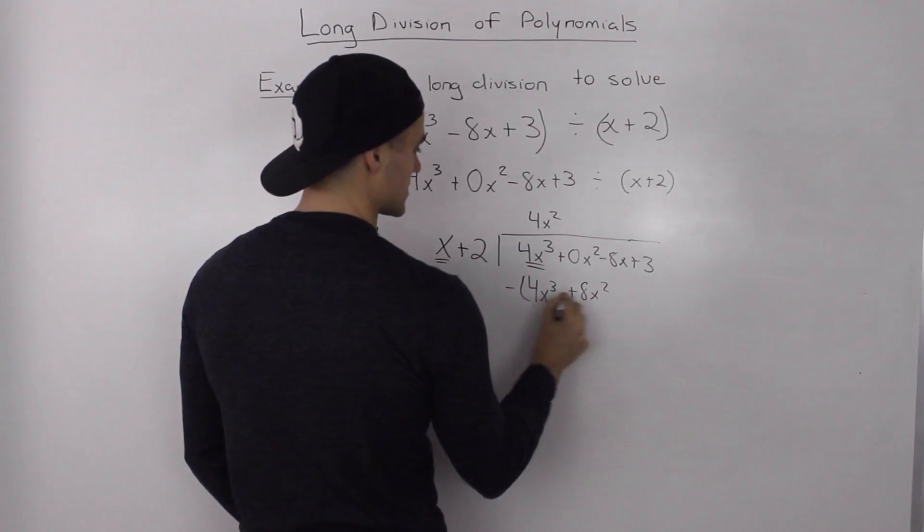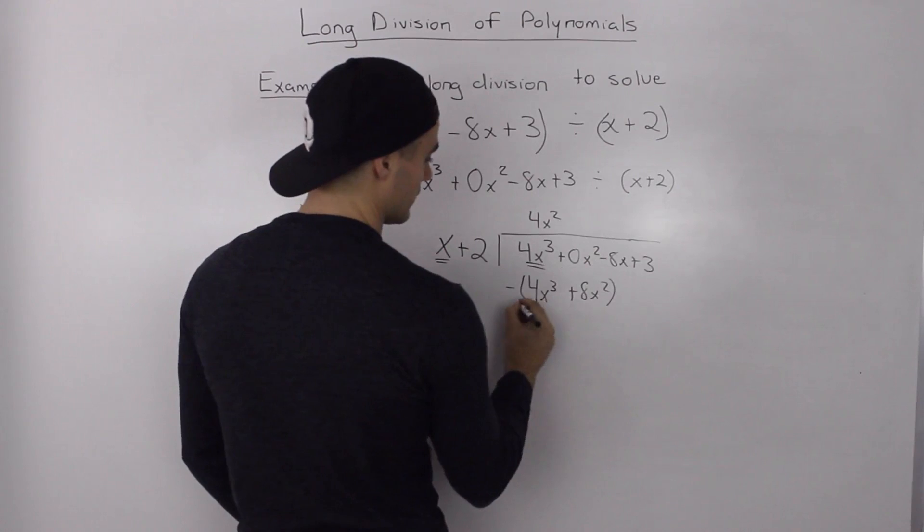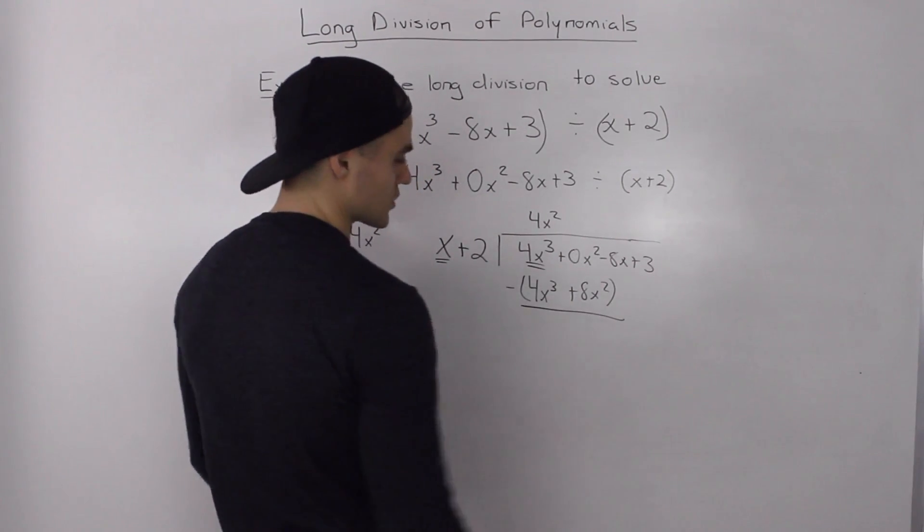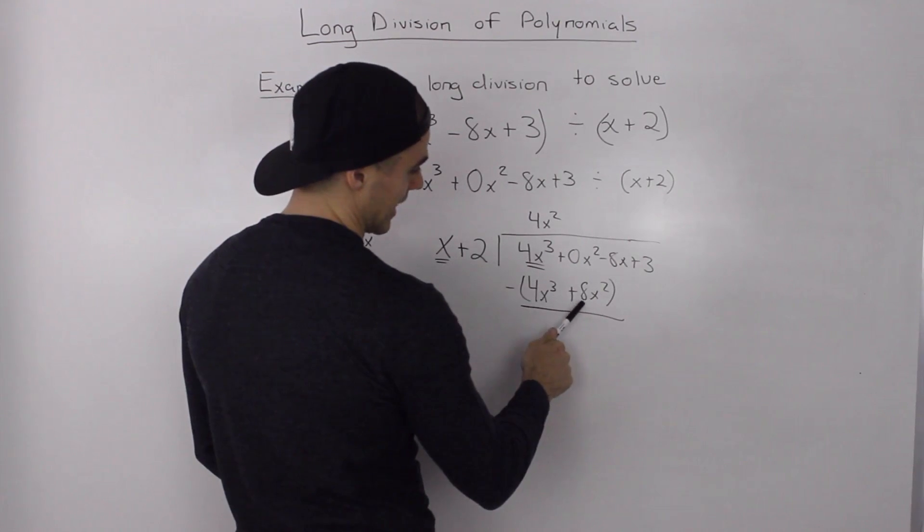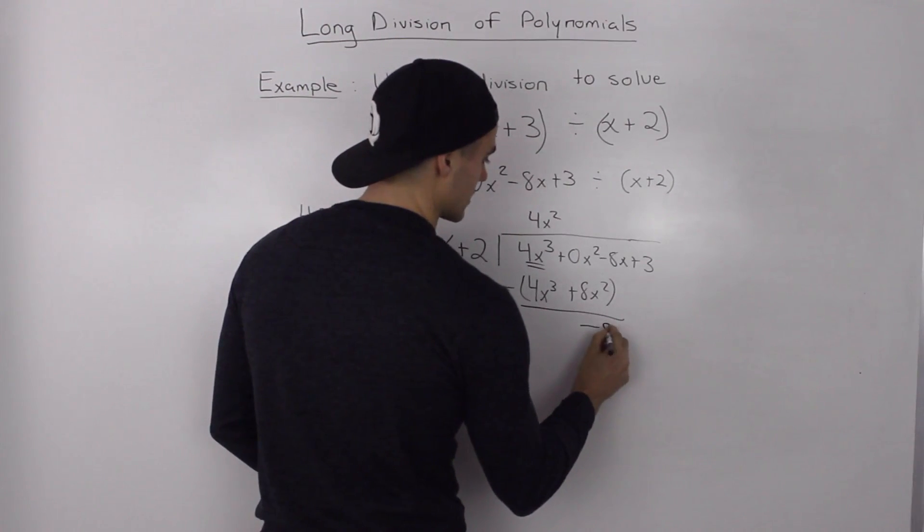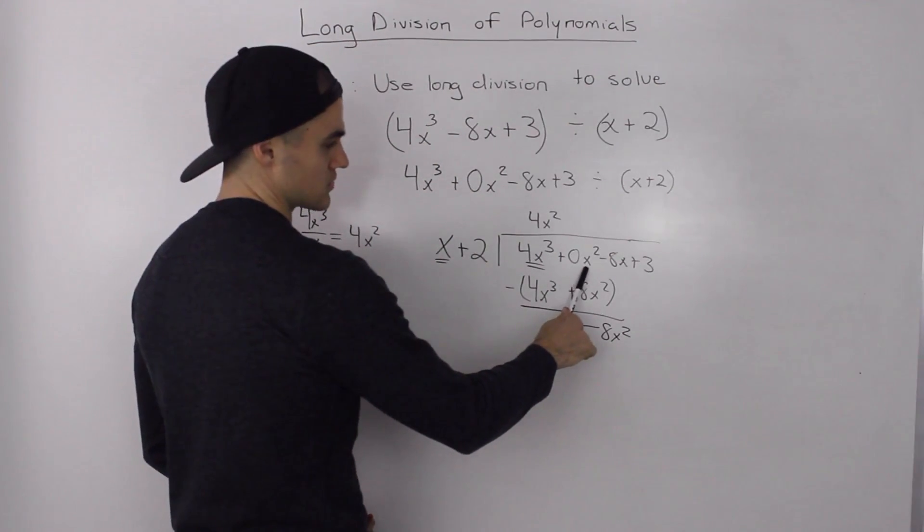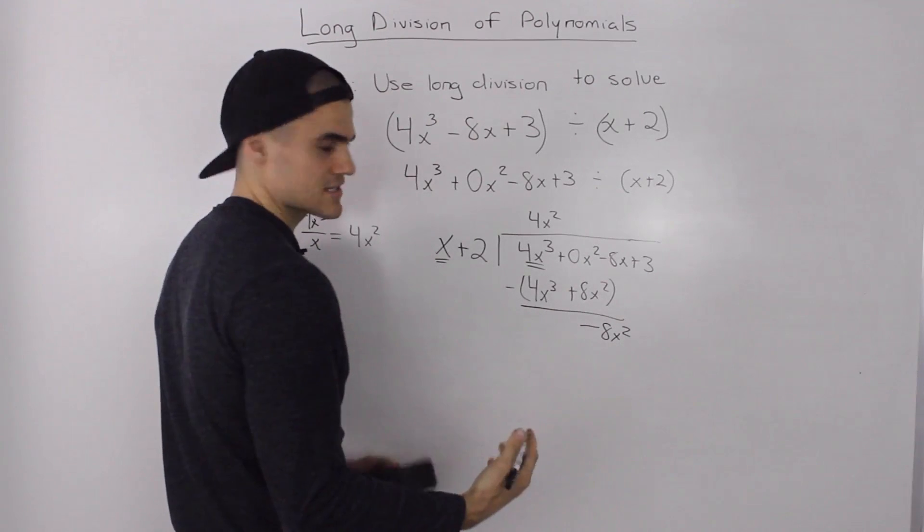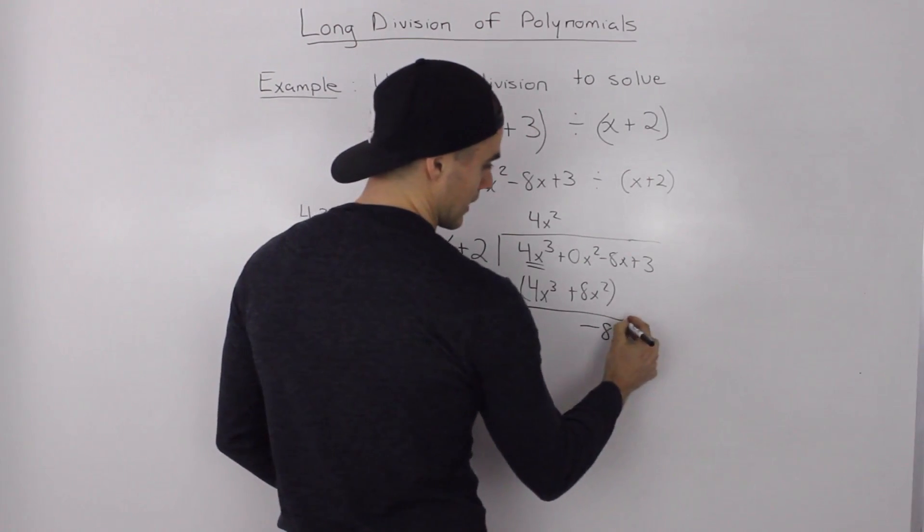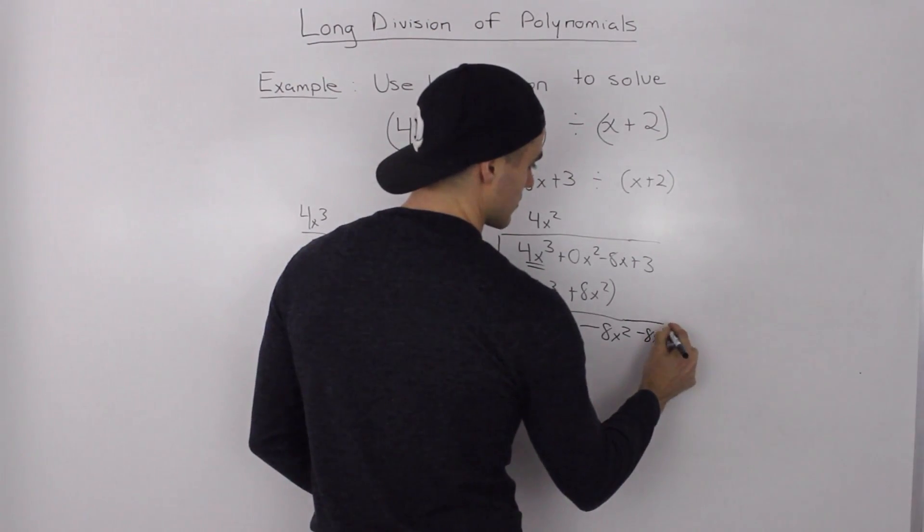And then when we subtract the dividend, this term from the dividend, 4x cubed minus 4x cubed, that nets out to 0. And 0x squared minus 8x squared ends up giving us negative 8x squared. So, notice how this 0x squared here, it made the subtraction here easier to see. And then we just bring down the negative 8x plus 3.